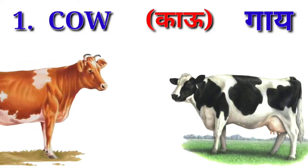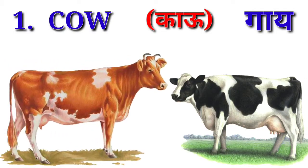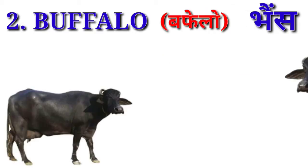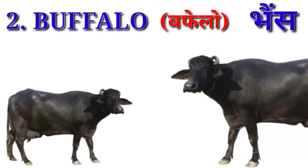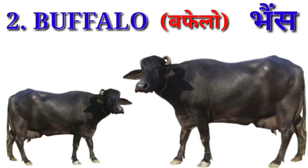Cow — cow means gai. Buffalo — buffalo means bhaas.